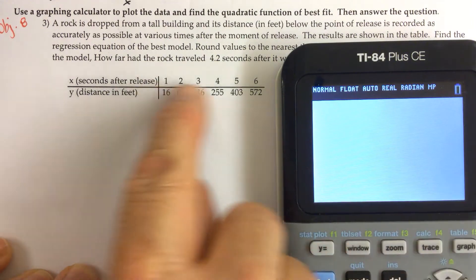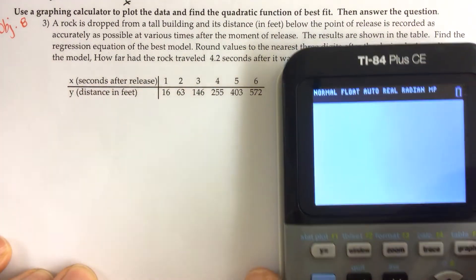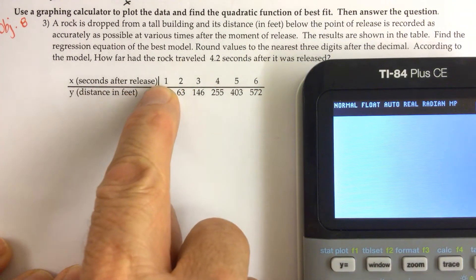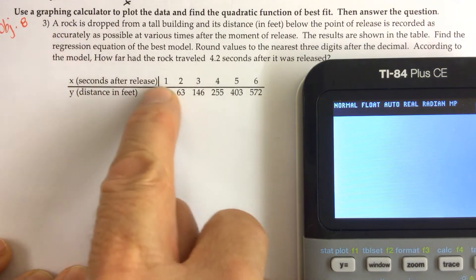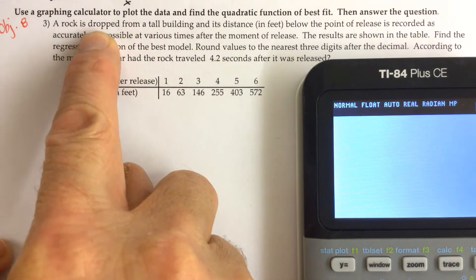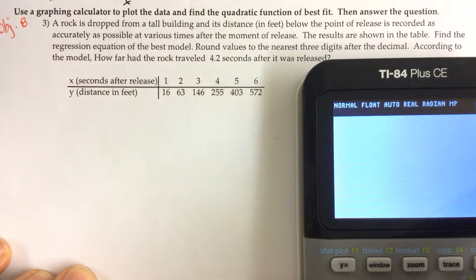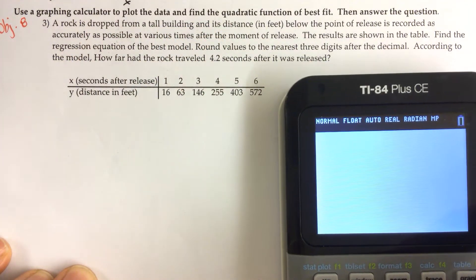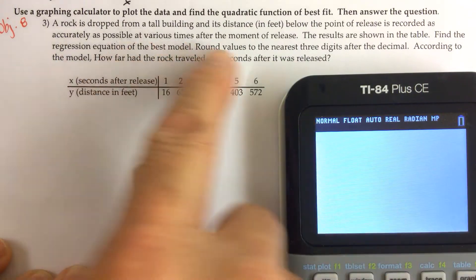So we have data given to us. X is the number of seconds after the rock is released or dropped from the tall building. So the scenario is the rock is dropped from a tall building and its distance in feet below the point of release is recorded as accurately as possible.